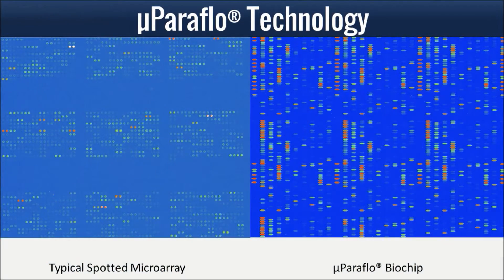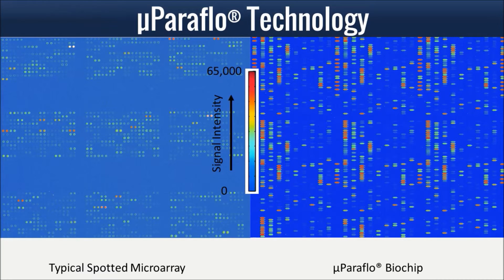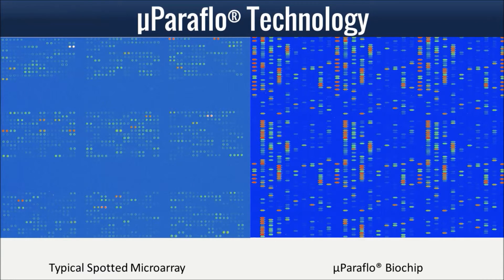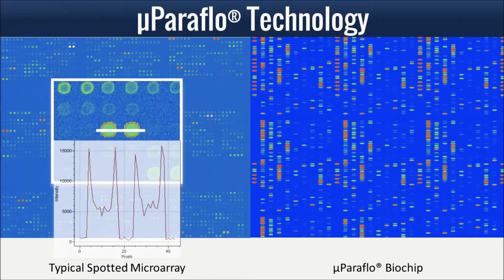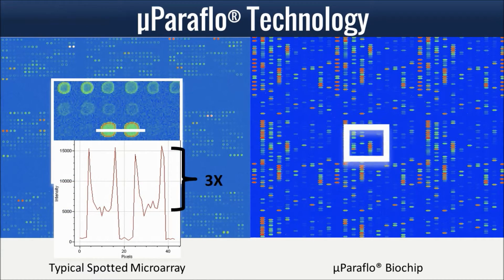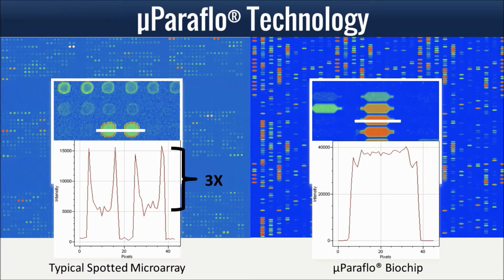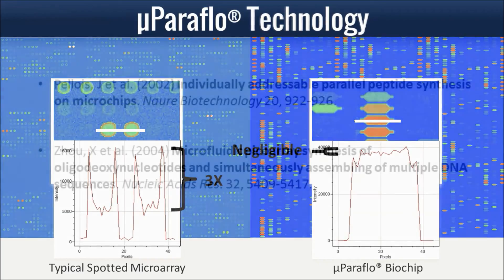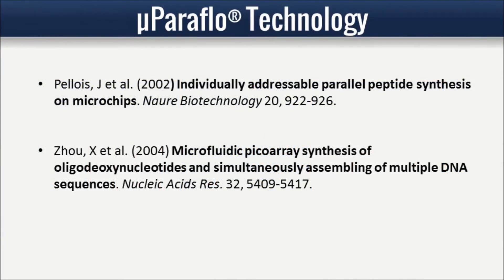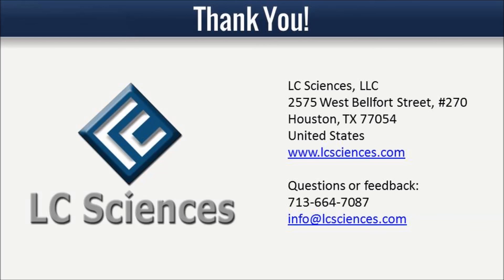These are raw data images. The color scheme indicates signal intensity: blue is zero, red is 65,000. If we enlarge the images and plot intensity profiles through the spots, you can see that on a typical array, the intensity within each feature varies three times, from 5,000 to 15,000, whereas intensity variation within each feature is negligible on the MicroParaFlow array.